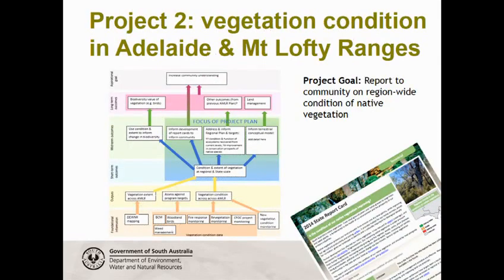The next project, still in early planning phases, is vegetation condition in the Lofty-Mount Lofty Ranges. The project goal is to report on region-wide condition of native vegetation. I'm not going to talk about results — it's just a case study to show you about program logic. We use program logic to identify information that can contribute to outcomes and aspirational goals. We looked at data sources and how they would contribute to project goals, to targets within the region, and to aspirational goals at the top. It links inputs, outputs, short-term, medium-term, long-term, and aspirational goals.